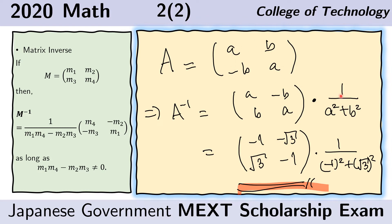We multiply the entire thing by 1 over the product of A and A which is A squared minus the product of B and negative B which is negative B squared, so we have a plus sign here.